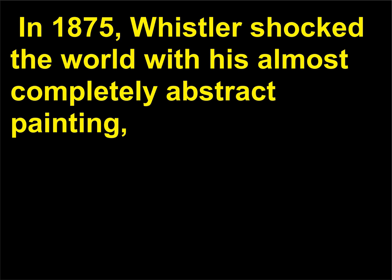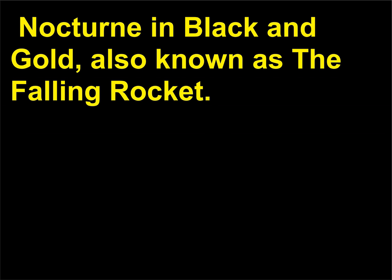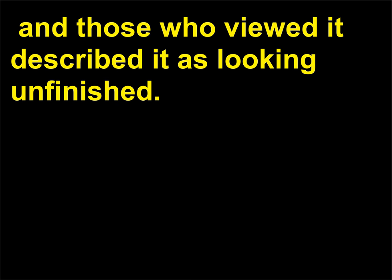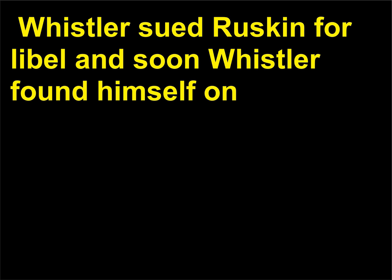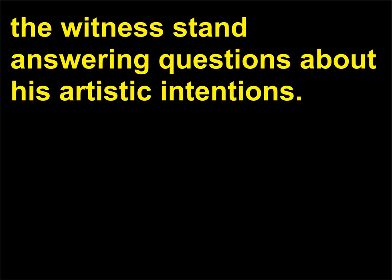In 1875, Whistler shocked the world with his almost completely abstract painting Nocturne in Black and Gold, also known as the Falling Rocket. Whistler was accused of having no clear subject for his work, and those who viewed it described it as looking unfinished. The painting personally enraged John Ruskin, Britain's premier art critic, who accused the artist of throwing paint in the public's face. Whistler sued Ruskin for libel and soon found himself on the witness stand answering questions about his artistic intentions.